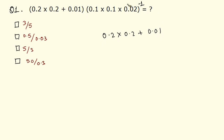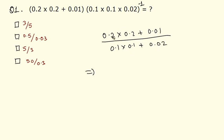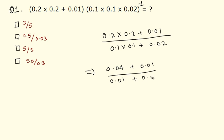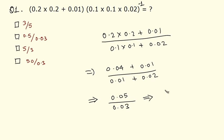It is raised to minus 1, which means it is the reciprocal. So we divide by 0.1 into 0.1 plus 0.02. This equals 0.04 plus 0.01 upon 0.01 plus 0.02, which is 0.05 upon 0.03, and that gives us 5 by 3.